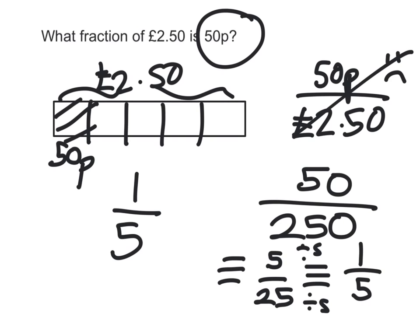Alternatively, you could have looked at 50 and 250 and seen that their largest common factor was 50, and divided them straight away by 50 to get one-fifth.